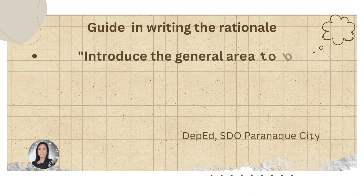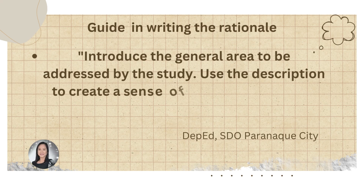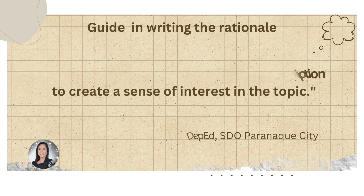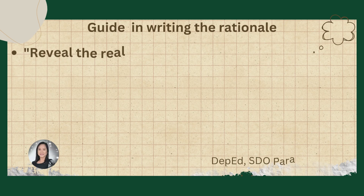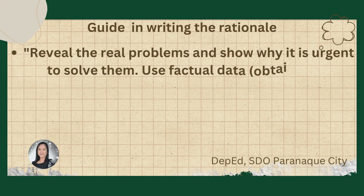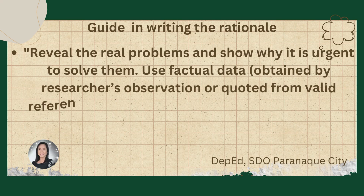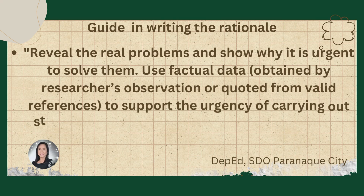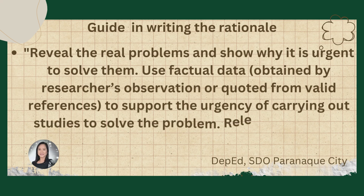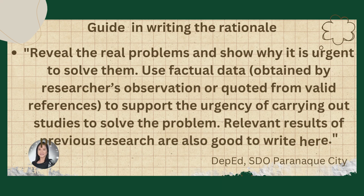Here's a guide in writing the rationale of your study. Introduce the general area to be addressed and use the description to create a sense of interest in the topic. Reveal the real problems and show why it is urgent to solve them. You may use factual data obtained from researchers' observation or quoted from valid references in order to support the urgency of carrying out studies to solve the problem.